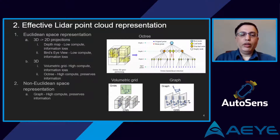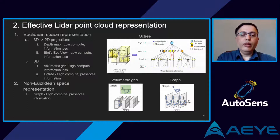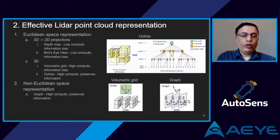Let us review how we can overcome the challenges of point clouds using efficient data representations. We can order point clouds using two techniques. The first uses familiar Euclidean space. In a 3D-to-2D projection, we represent the 3D space by a 2D cell, which is less computationally expensive but results in loss of information along one spatial axis. A depth map preserves width and height but loses depth channel detail. A bird's eye view preserves width and depth but loses height channel detail.